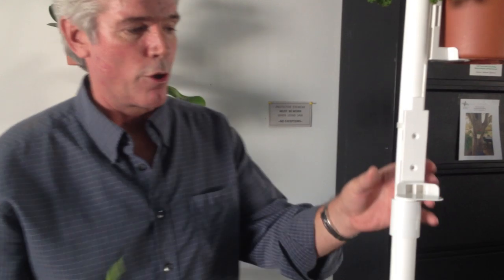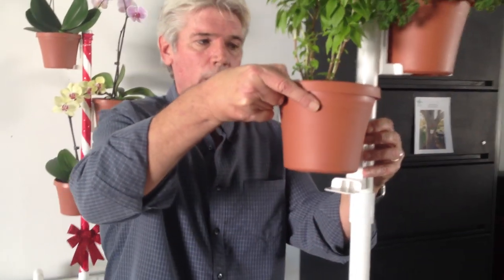Cut off the extra part of the zip tie, and then simply take your favorite herb, plant, or orchid, and slip it onto the hanger. Simple as that.